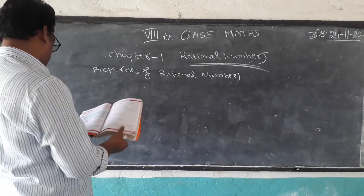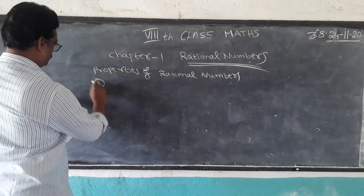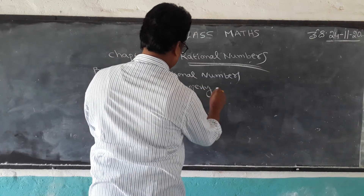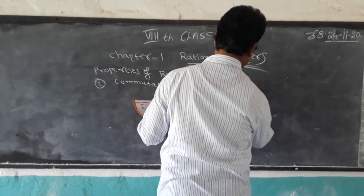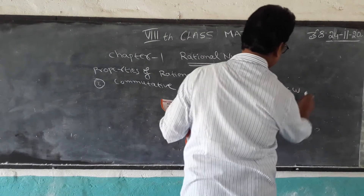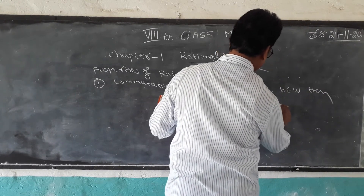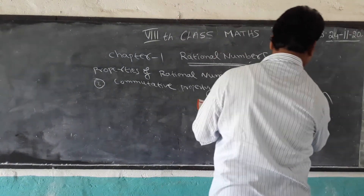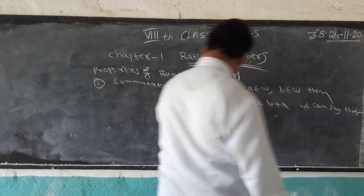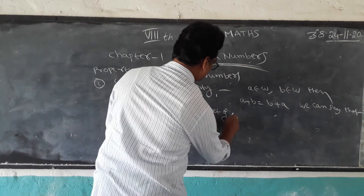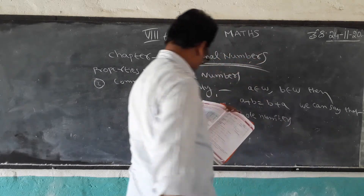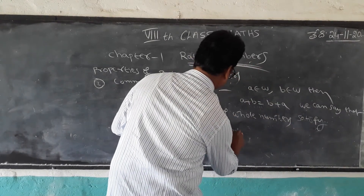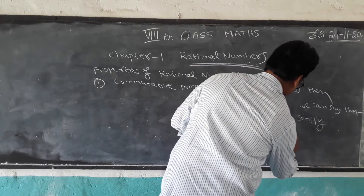The second property is the Commutative Property. For example, take two numbers: A belongs to W, B belongs to W. Then A plus B is equal to B plus A. Then the set of whole numbers satisfies the Commutative Property.